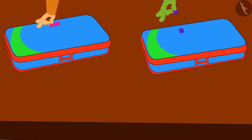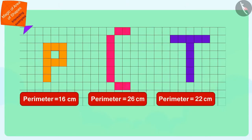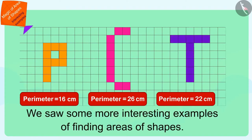Chanda and Tufan made letters indicating their names on their compass boxes by using those stickers so that they would never fight again about their compass boxes. Children, in this video, we saw some more interesting examples of finding areas of shapes. In the next video, we will see even more interesting examples related to this.